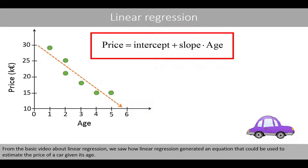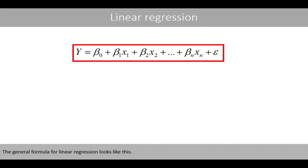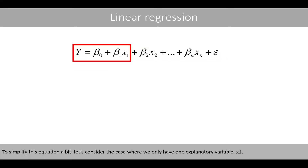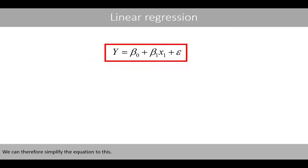From the basic video about linear regression, we saw how linear regression generated an equation that could be used to estimate the price of a car given its age. The general formula for linear regression looks like this. To simplify this equation a bit, let's consider the case where we only have one explanatory variable, x1. We can therefore simplify the equation to this.